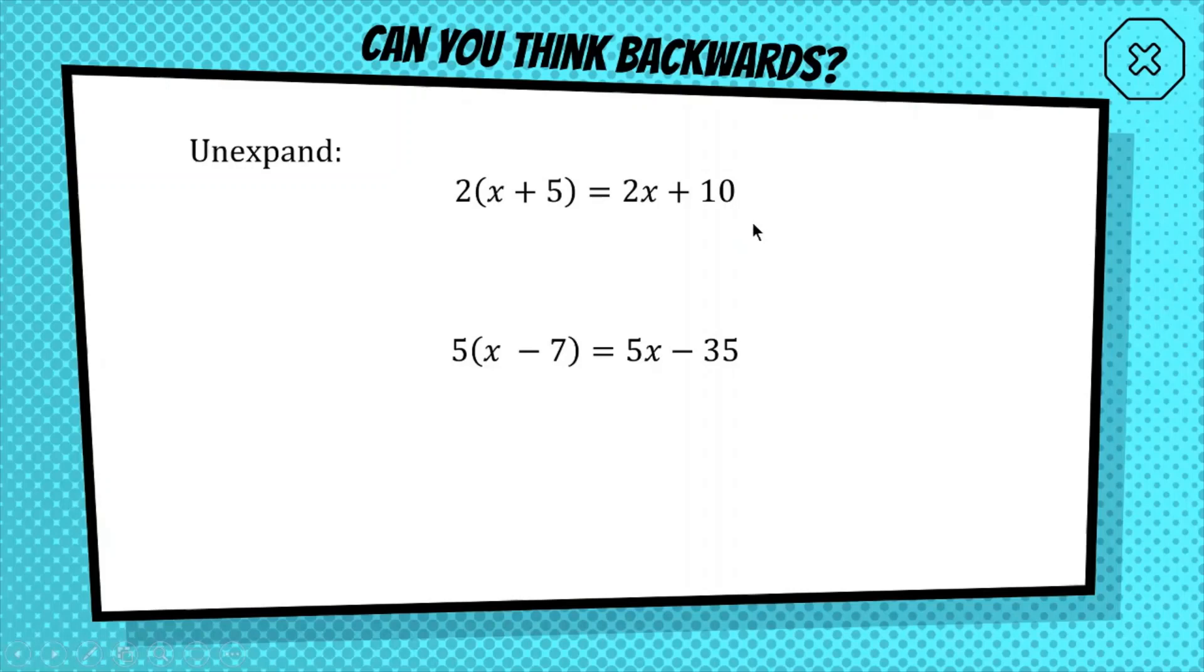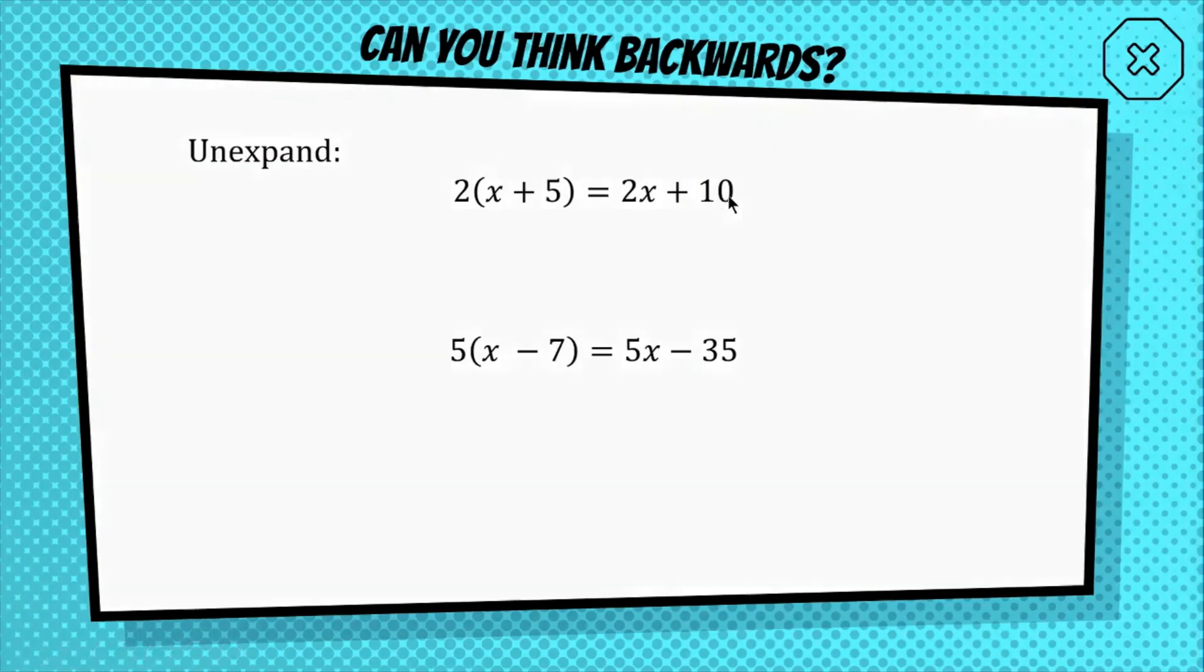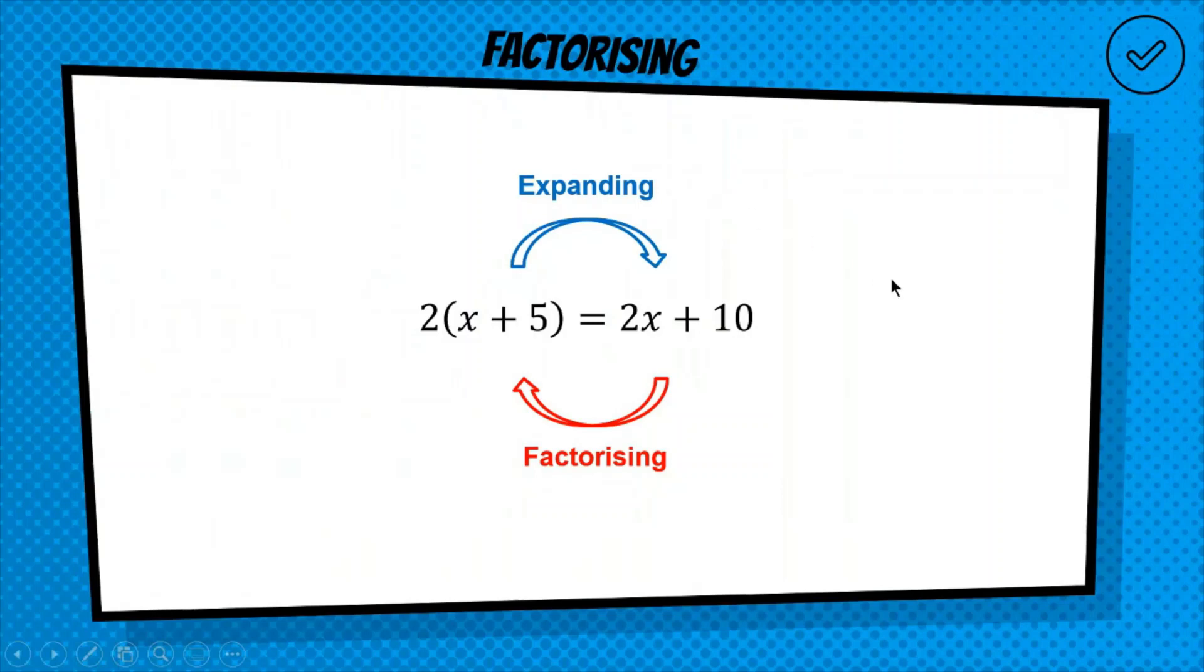Okay, so if I asked you to factorize 2x plus 10, the answer would be 2 outside of x plus 5. So you've got to look at the two terms, and you've got to try and see what is in common, and then you've got to work backwards to factorize your answer. So this to this is expanding, and so this back to where you started is factorizing. Probably worth writing that down, just so you have something in your notes to refer to.